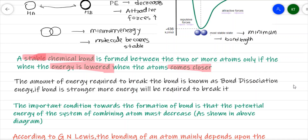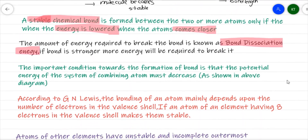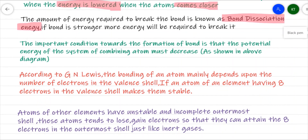If a bond is formed stronger, we require more energy to break that bond. The energy required to break the bond is called bond dissociation energy. For stable bond formation, the combining atoms should approach each other and the potential energy of the system should be lower.